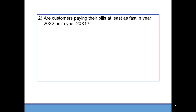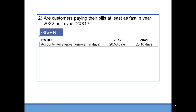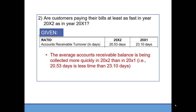Are customers paying their bills at least as fast in year 20x2 as in year 20x1? Since we're looking at how customers are paying their bills, we'll turn our focus to accounts receivable. We are given the accounts receivable turnover in days. In the earlier year it took just over 23 days to collect receivables, and in the most recent year it took 20.53 days. This indicates that we were able to collect receivables more quickly in 20x2. Note that this is expressed in days — it could have been expressed in times per year.